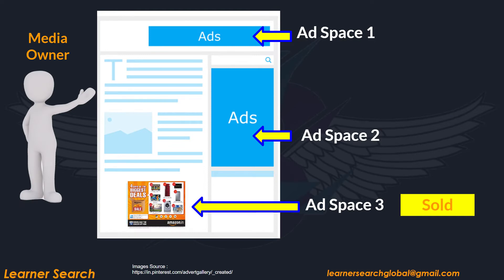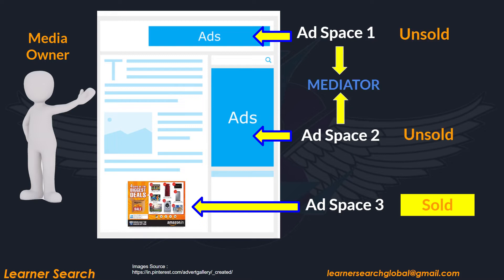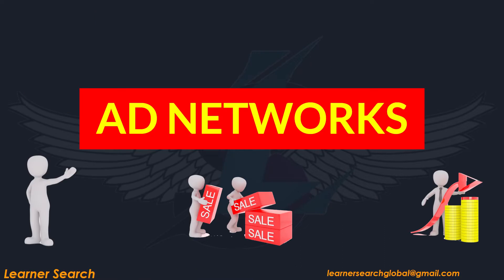Let's compare these land spaces with publisher ad inventory. From publisher websites, let's say that out of three ad spaces ready to offer, only one ad space is sold. Similar to the land space we described, the publisher needed a mediator to help them sell the remaining two ad spaces. Ad network acts as a mediator here.